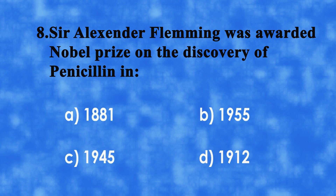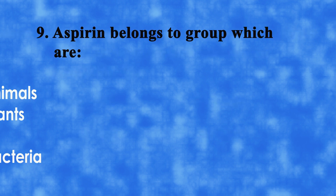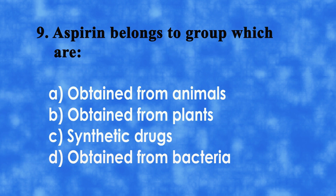No. 8: Sir Alexander Fleming was awarded the Nobel Prize on the discovery of Penicillin. A. 1881, B. 1955, C. 1945, or D. 1912. The correct answer is C. 1945.